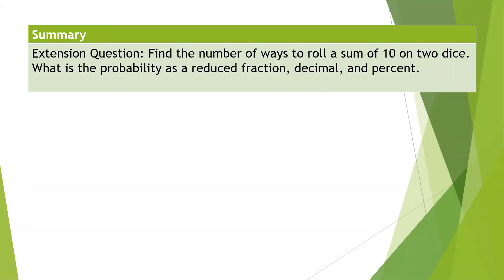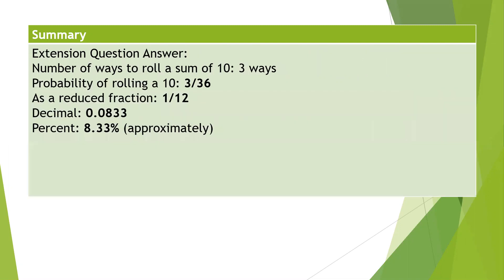Okay, now that you've had a minute to work on it, here are the answers. There's three ways of rolling a ten. When you reduce your fraction, because 3 divides 3 and 3 divides 36 evenly, you get a reduced fraction of 1/12. One-twelfth is 0.0833 as a decimal, and as a percent it's 8.33%. Let me know if you have any questions.